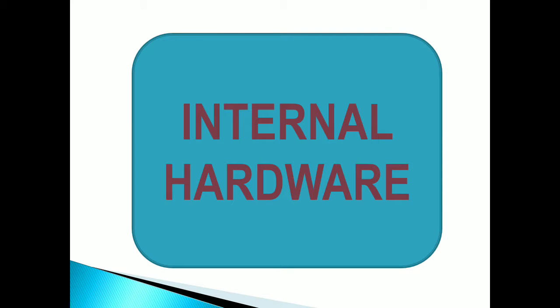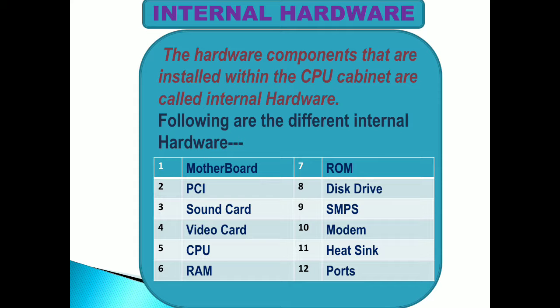What are Internal Hardwares? The hardware components that are installed within the CPU cabinet are called Internal Hardwares. Generally these hardware components you will find inside the CPU. Different hardware components found inside the CPU include: Motherboard, PCI, Sound Card, Video Card, CPU, RAM, ROM, Disk Drives, SMPS, Modem, Heatsink, Ports, etc.